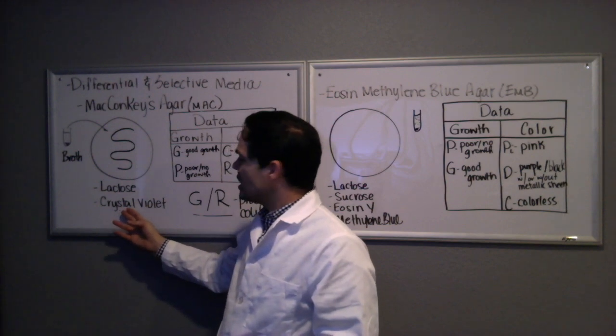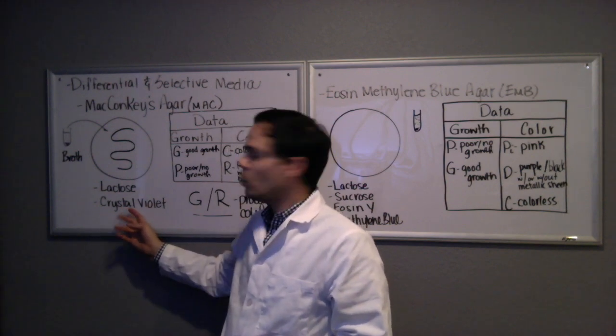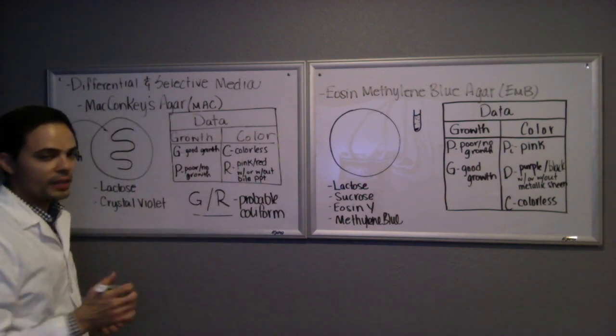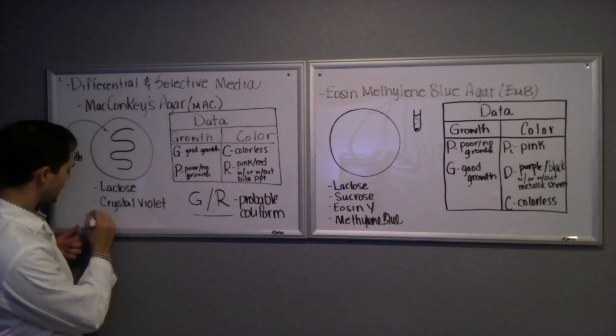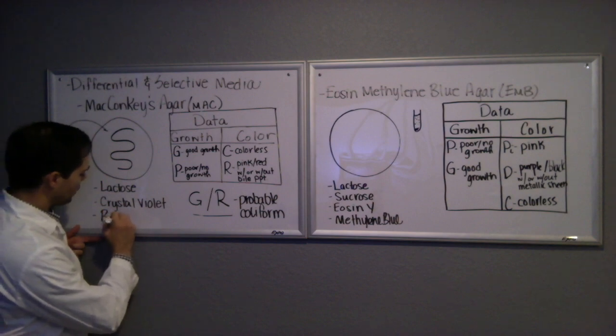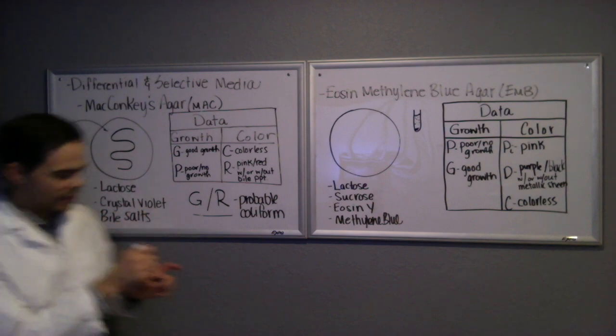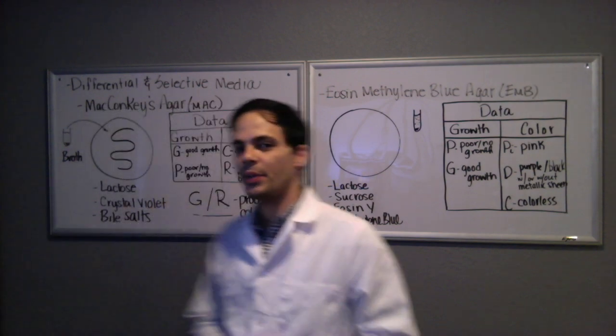This medium also contains two selective agents. One is crystal violet, which is a dye that prevents the growth of gram positives, and the second is bile salts. Bile salts also prevent the growth of gram positive bacterium.